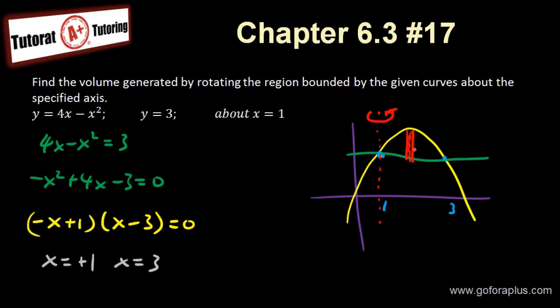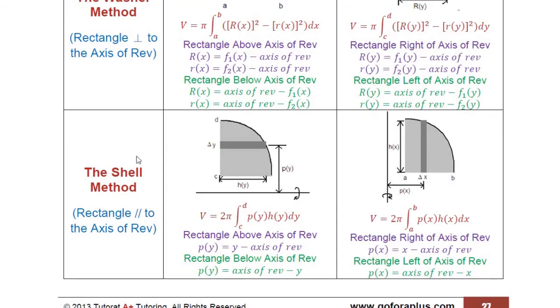Now, if it's vertical like this, then it will just be the top function subtract the bottom function. That one would be easier. But now the rectangle is parallel to the axis. So which method is this? This is basically the shell method because the rectangle is parallel to the axis of revolution.